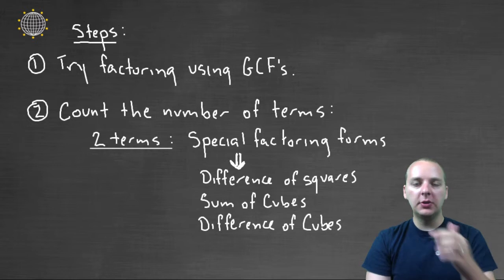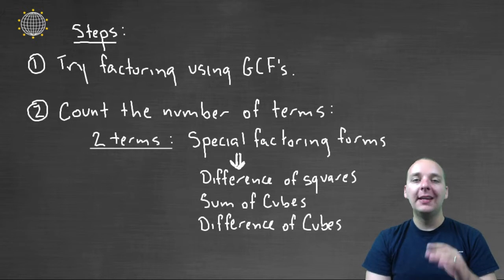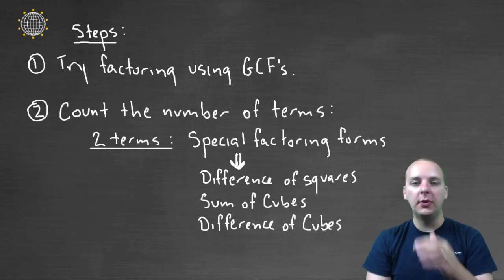So here we go. We're just going to walk through some logical steps. Step one, always, every single time, see if there are any common factors among all the terms. If there are, we always start by looking for the greatest common factor that we might be able to factor out of all the terms in our polynomial.